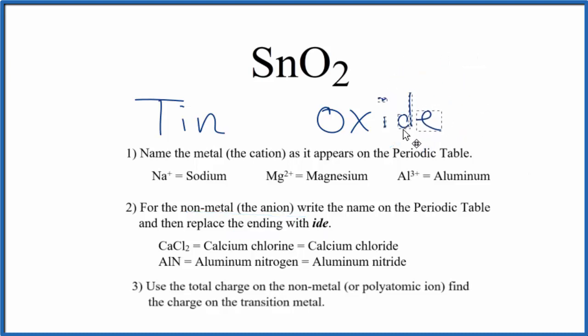So at this point we have tin oxide is the name for SnO2. But tin, we said that was a transition metal. That means that it can have different ionic charges depending on what it's bonded to. Here it's bonded to two oxygen atoms. Oxygen always has an ionic charge of two minus, each one of them. Two times two minus, that's four minus.